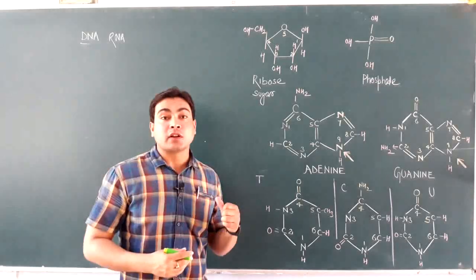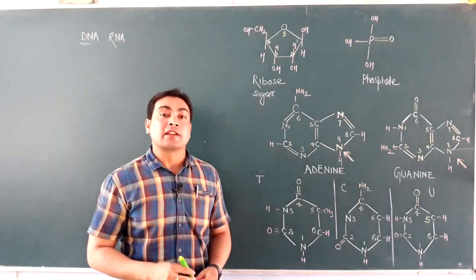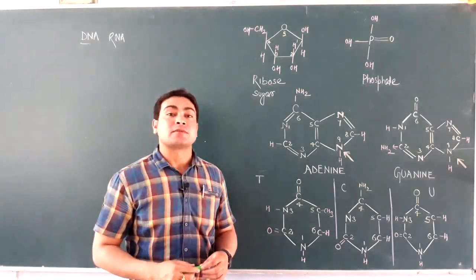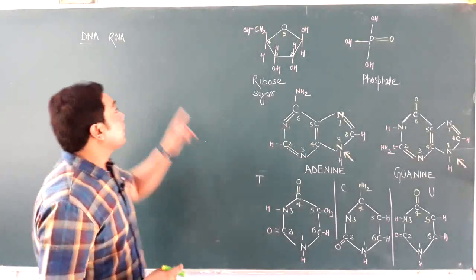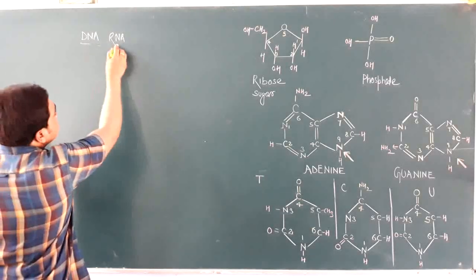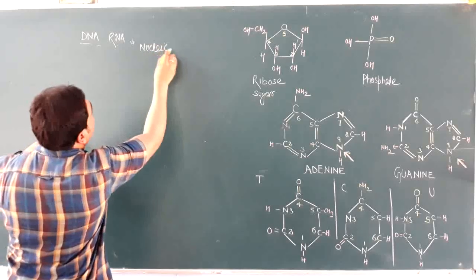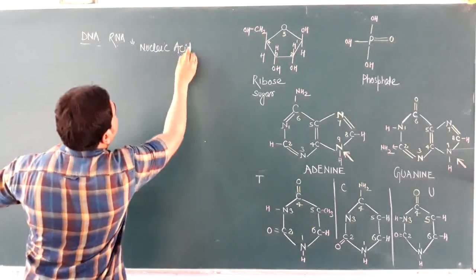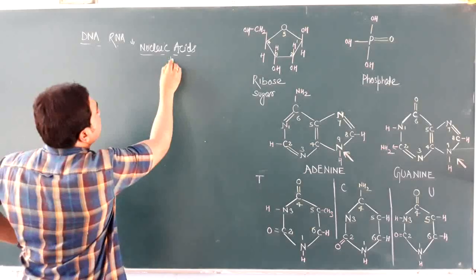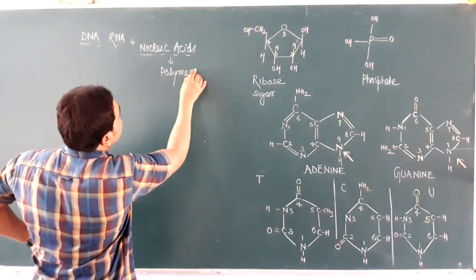In most living organisms, DNA is the genetic material, while RNA is the genetic material in certain viruses. Both DNA and RNA are nucleic acids, and they are formed by the polymerization of nucleotides.